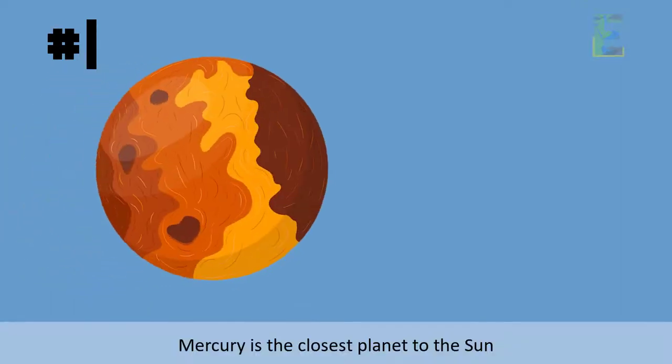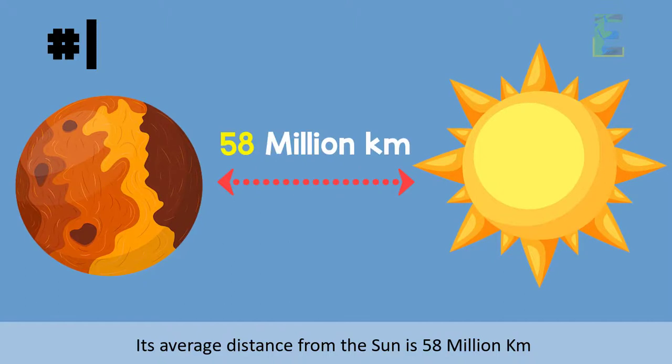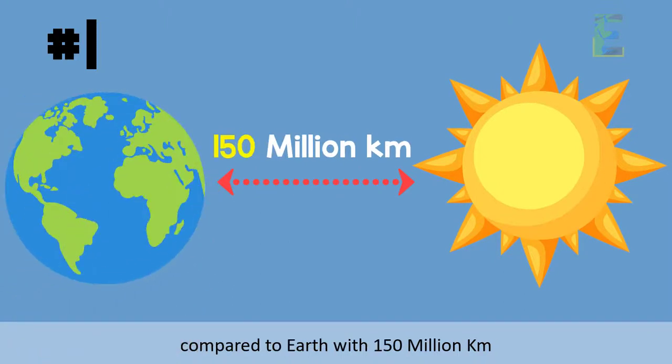Number 1. Mercury is the closest planet to the Sun. Its average distance from the Sun is 58 million kilometers compared to Earth with 150 million kilometers.